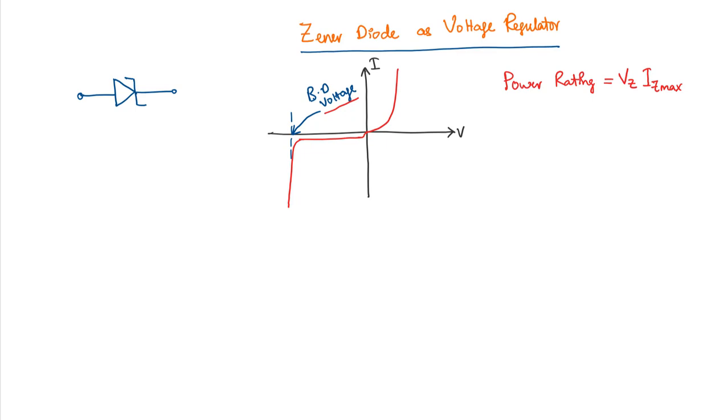So the amount of current that can flow maximum can be found from this. Because we can get the power rating of the diode from the spec sheet and we know what is the zener voltage, we can find this quantity based on this equation. So which means there is a cap or limit on the maximum current that can flow through the zener diode in reverse bias.